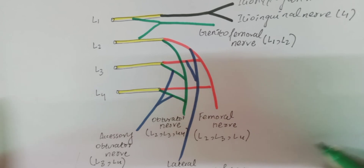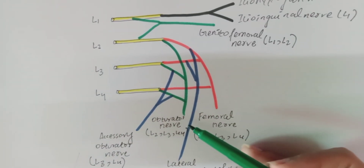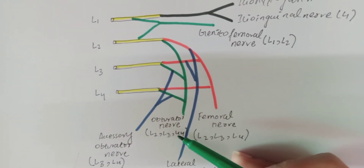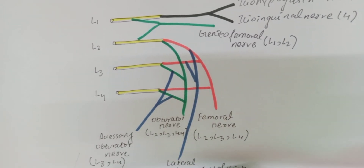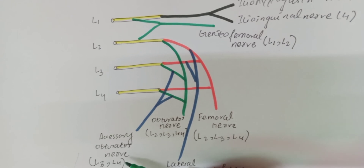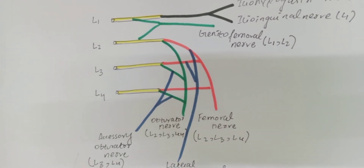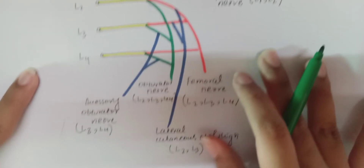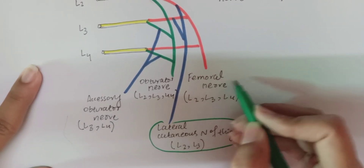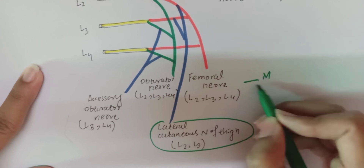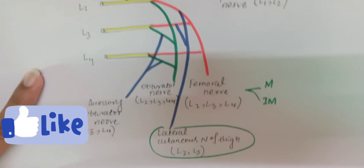The femoral nerve gives off several branches. The obturator nerve is the main nerve of the medial compartment of the thigh. The accessory obturator nerve is not present in all persons; it is present in only 30% of subjects. In the lumbar plexus, there is only one cutaneous branch — the other two, the medial and intermediate cutaneous branches, come from the femoral nerve.